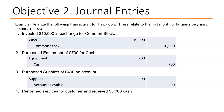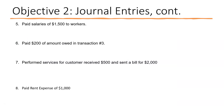Transaction four: performed services for a customer and received $3,000 cash. We debit cash $3,000 to increase our cash account, and credit service revenue $3,000 because we performed services for that customer. Transaction five: paid salaries of $1,500 to workers. We're decreasing cash and recognizing expense, so we debit salaries expense $1,500 and credit cash $1,500.